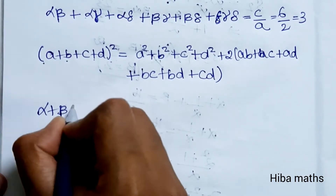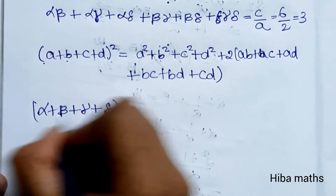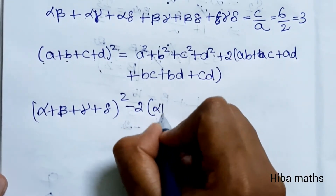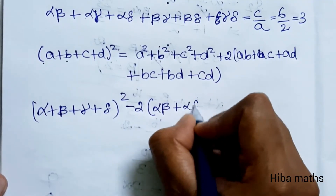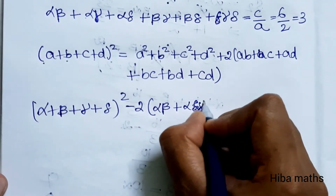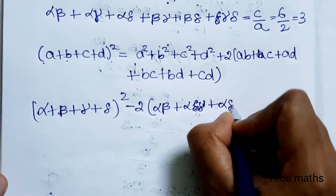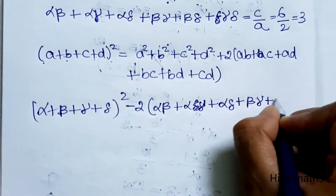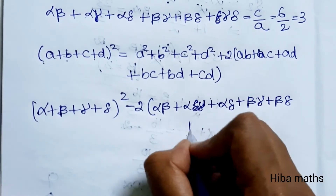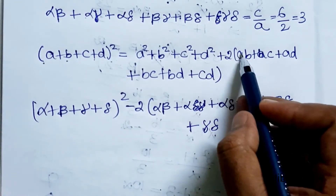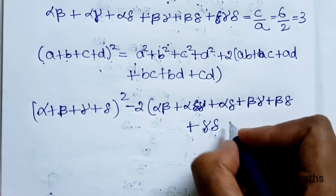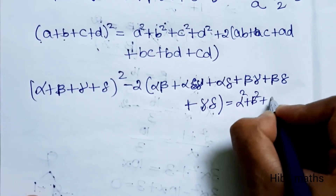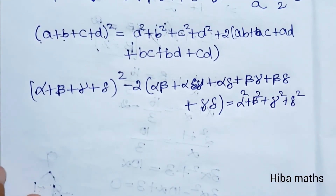So alpha plus beta plus gamma plus delta whole square equals alpha square plus beta square plus gamma square plus delta square plus 2 times of alpha into beta plus alpha into gamma plus alpha into delta plus beta into gamma plus beta into delta plus gamma into delta. That gives us the sum of the squares.